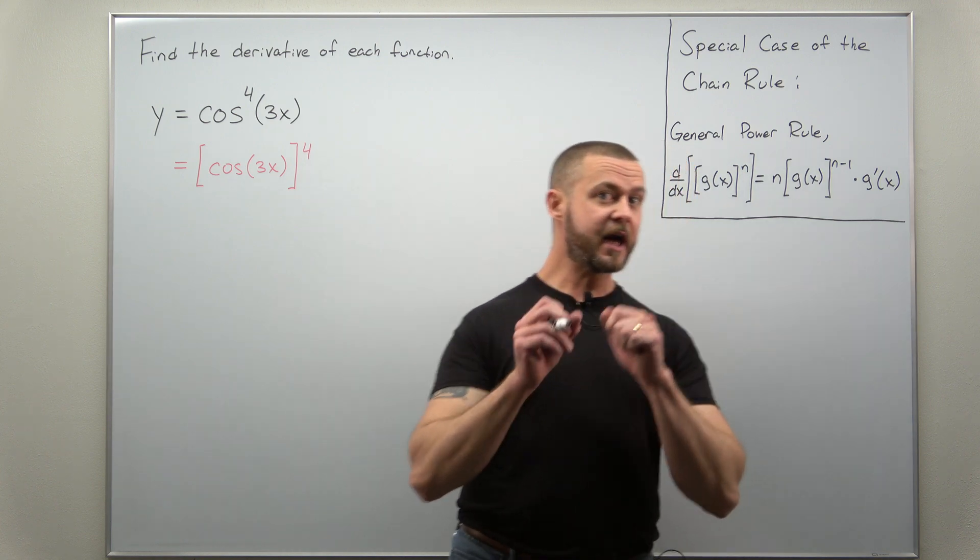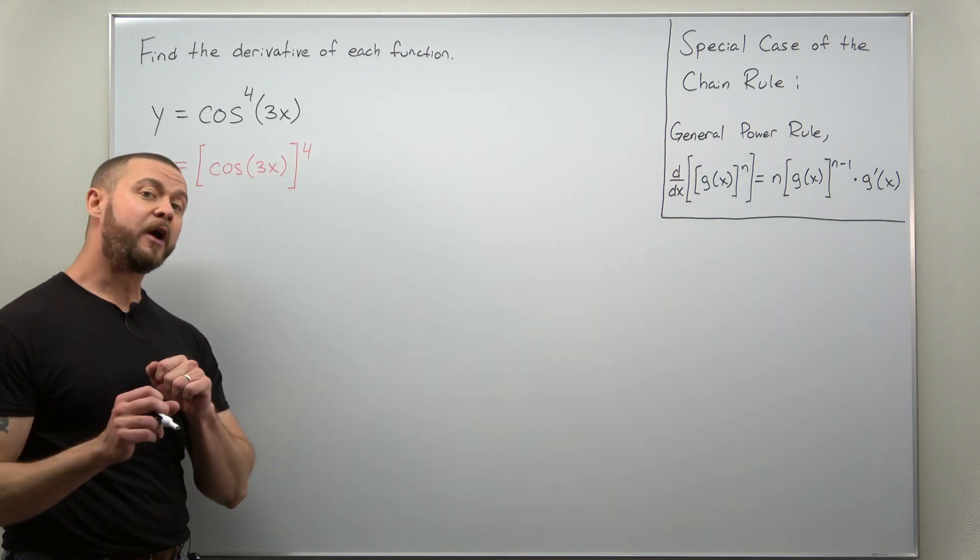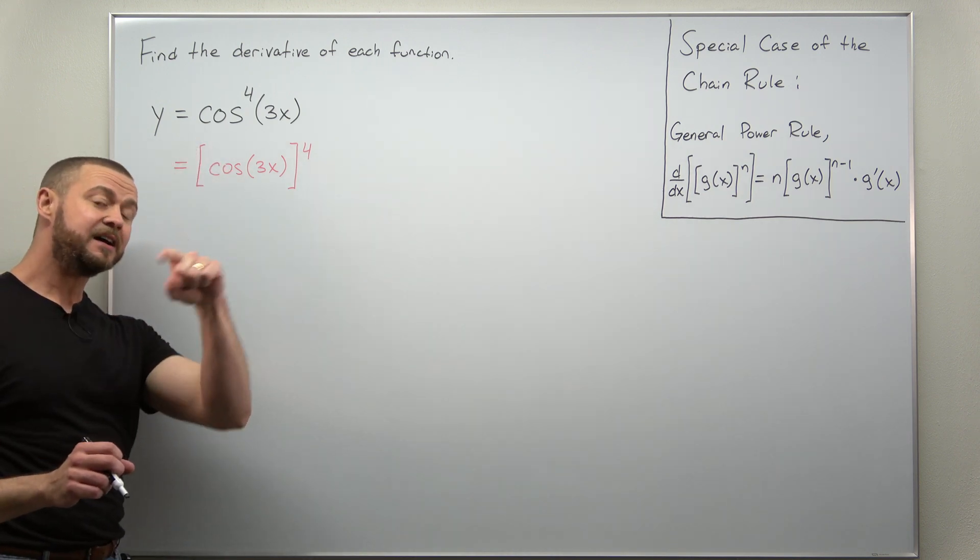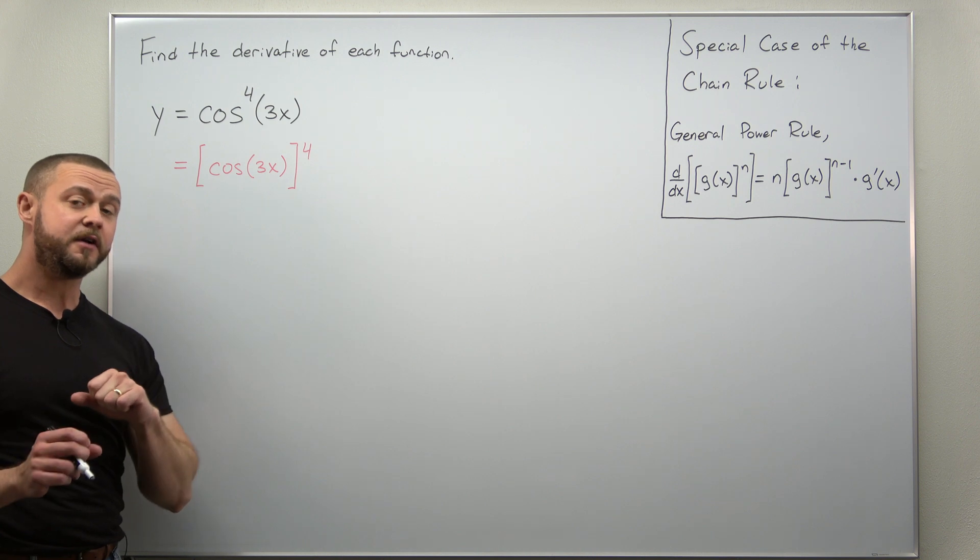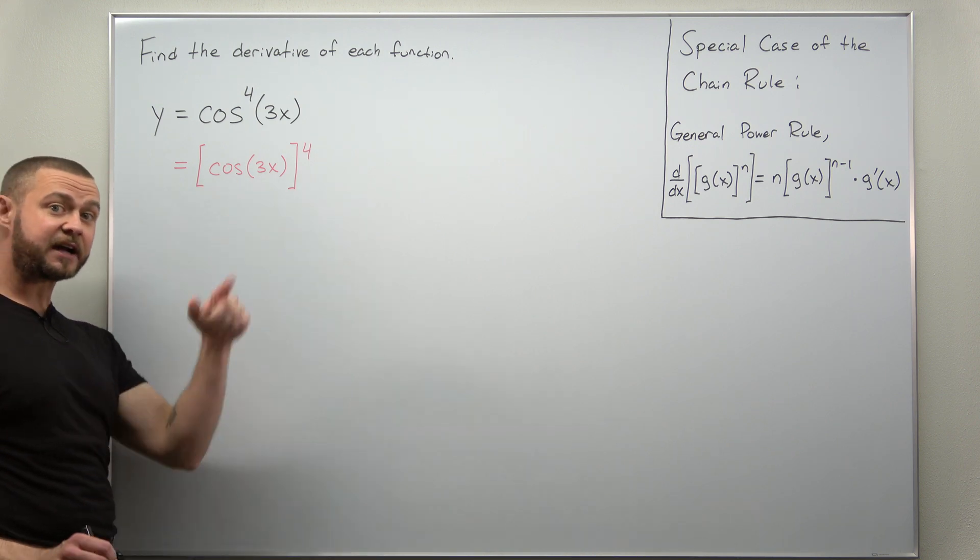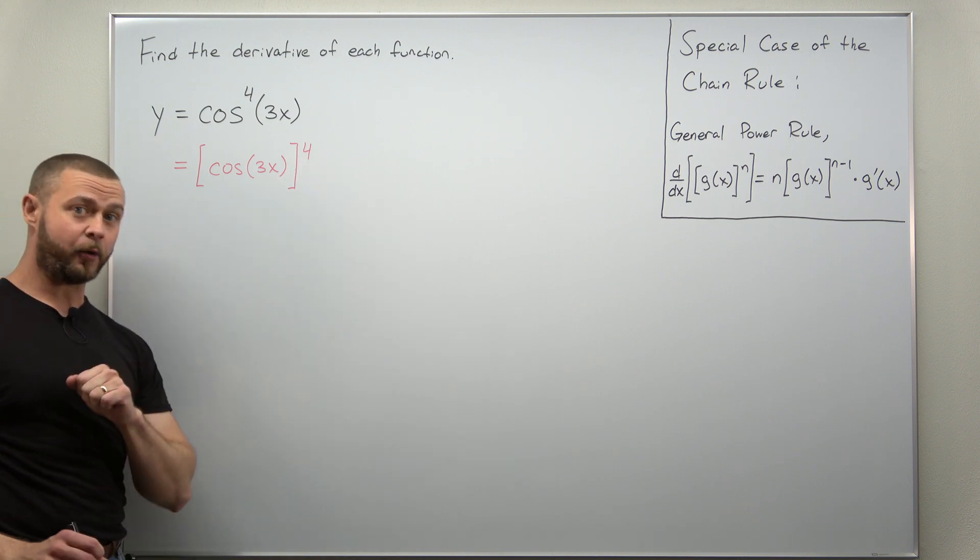Let's start by looking at our function and rewriting it in case you're not comfortable with the notation. So our function is expressed as cosine to the fourth power of 3x. You can rewrite this as cosine of 3x all to the fourth power.